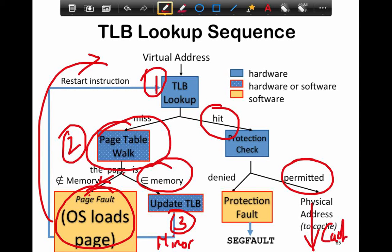If the TLB lookup itself succeeds, you check permissions and if permitted you get the physical address and go to the cache. Note that the cache itself is a separate storage structure that will either hit or miss. If the protection check fails, you have a protection fault and an exception is thrown - a segmentation fault.